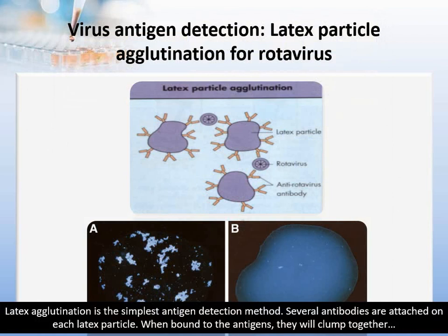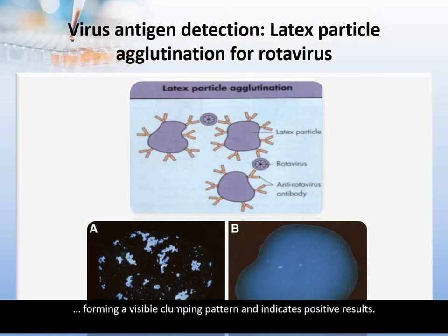Latex agglutination is the simplest antigen detection method. Several antibodies are attached on each latex particle. When bound to the antigens, they will clump together, forming a visible clumping pattern that indicates a positive result.